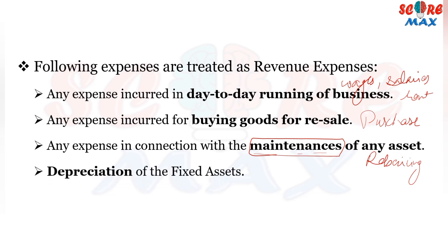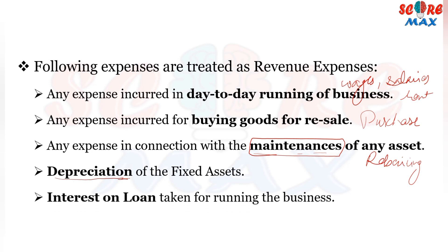Depreciation of fixed assets is also revenue expenditure. Depreciation is that portion of an asset's cost which we have utilized in that year, that is why it is termed as revenue expenditure. The next and last item is interest on loan — whatever loan we have taken to run the business and the interest we pay on it each year is also revenue expenditure.